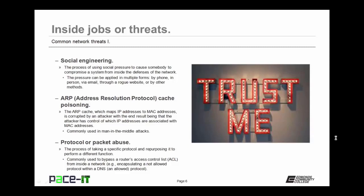ARP cache poisoning is another threat that can occur on your network. In ARP cache poisoning, the ARP cache — which maps IP addresses to MAC addresses — is corrupted by an attacker, with the end result being that the attacker has control of which IP addresses are associated with MAC addresses. It's commonly used in man-in-the-middle attacks.